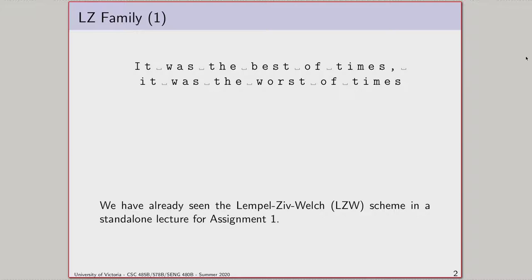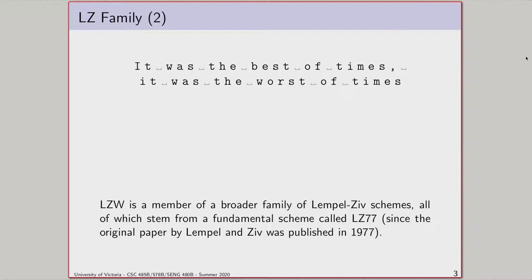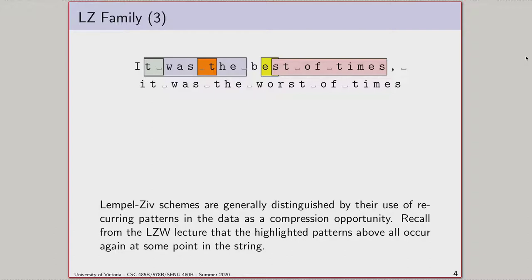The deflate scheme tends to be defined in people's minds by this one distinguishing component more than others. Of all currently used schemes, all of them use Huffman coding or something similar, but not many use something like this. We're going to talk about the Lempel-Ziv family of schemes. The key distinguishing characteristic is using patterns that already exist in the input data to leverage as a compression opportunity.